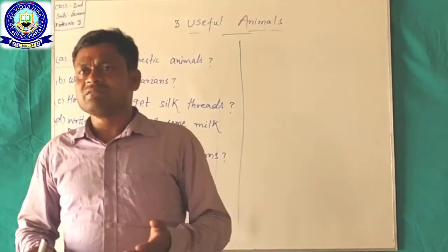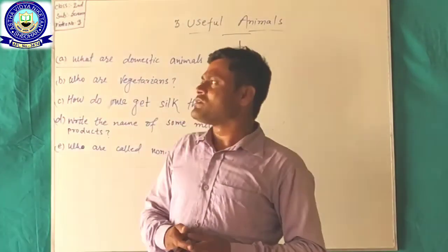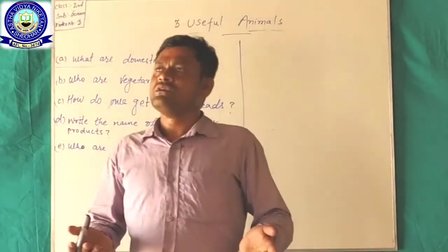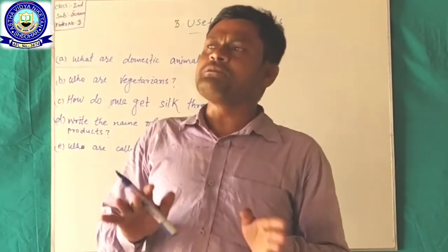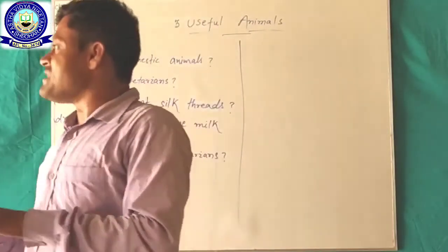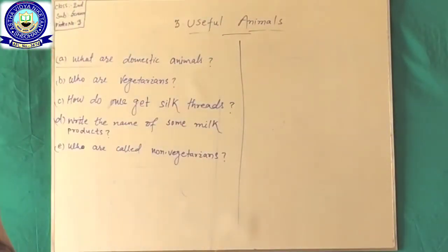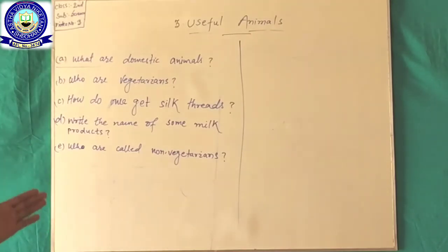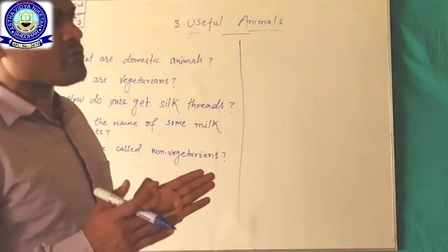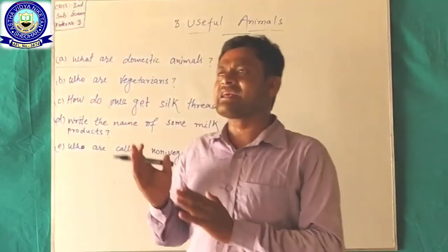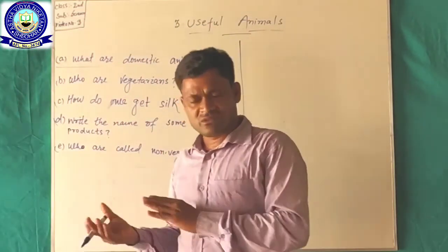Who are we called vegetarians? People who eat plant and plant products and do not eat meat and eggs are called vegetarians. And who are non-vegetarians? People who eat meat, fish and eggs are called non-vegetarians.